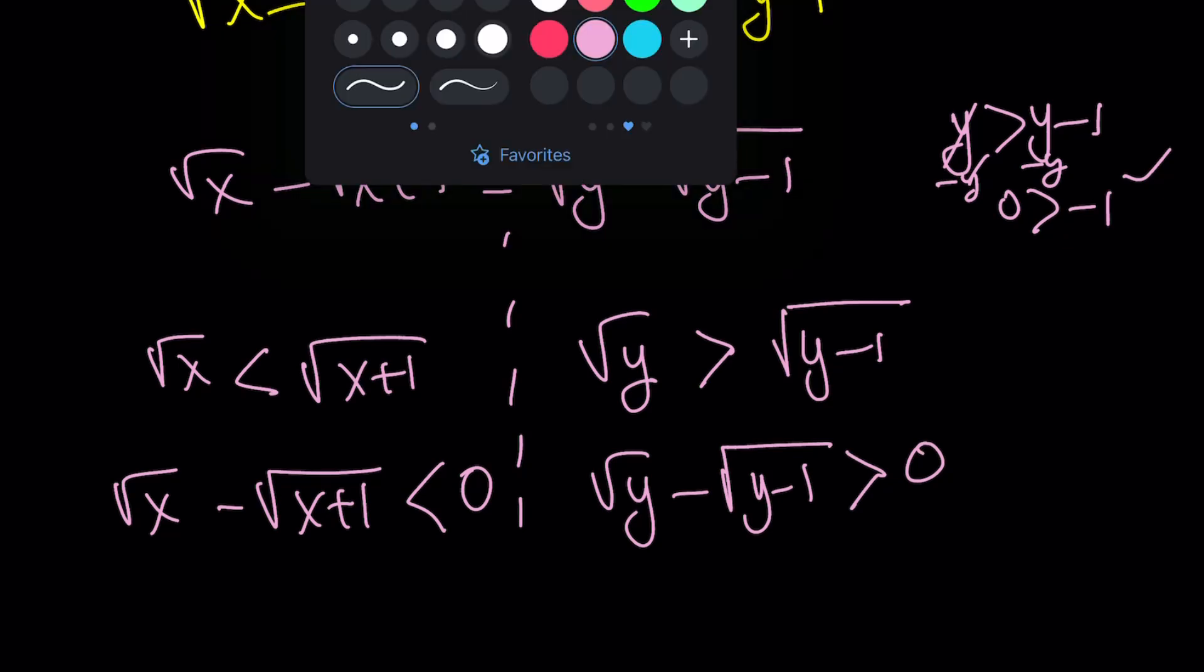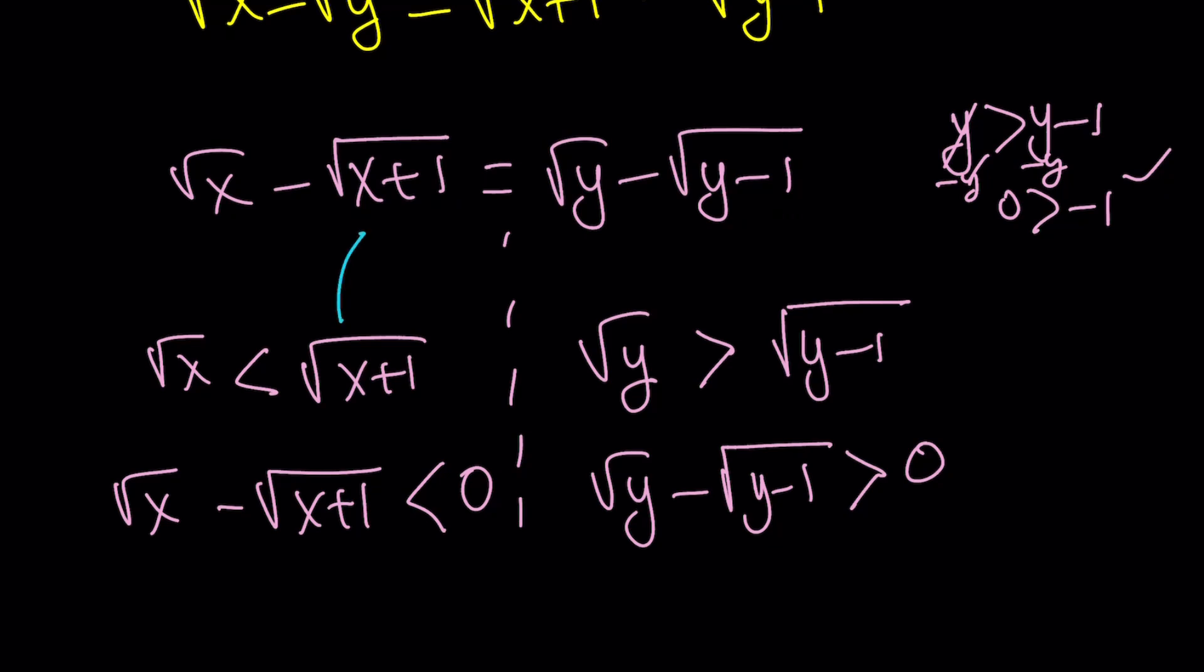It's a problem, but here's a bigger problem. We have an expression that is negative on the left-hand side and an expression positive on the other side. But they're equal. It's impossible. They're not equal to 0 because, obviously, x and x plus 1 cannot be the same, nor can y and y minus 1 be. So, there is no solution to this. No solution, no good, no graph, no nothing.